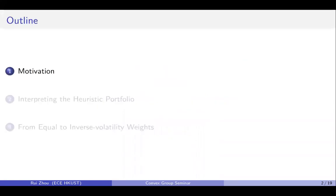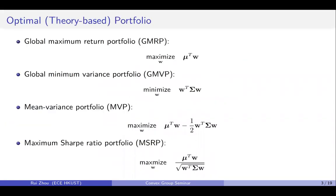I believe most of you are familiar with the theory-based portfolios. Usually we need to solve an optimization problem to get an optimal solution and then we use that optimal solution to deploy our optimal portfolio. Here we have four kinds of optimal portfolios that derived from solving a problem.